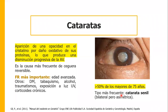Los factores de riesgo más importantes son la edad avanzada, diabetes mellitus, porque hay un tipo de catarata metabólica asociada a diabetes, tabaquismo, alcohol, traumatismo, exposición a luz ultravioleta y corticoides crónicos. En los ancianos, más del 50% se dan en mayores de 75 años, por lo que es probable que muchos de nuestros abuelitos ya hayan sufrido cataratas.